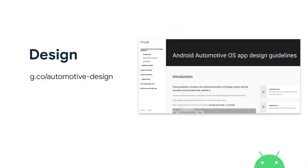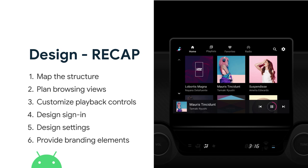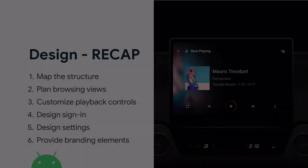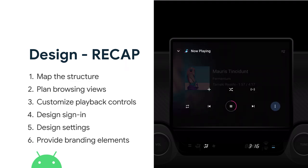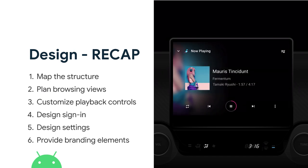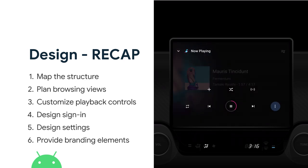On design, we have published detailed guidelines which help inform design decisions. You can find them at g.co/automotive-design, and we continue to update and improve that site. As a quick recap: if you are starting fresh, think about how you want to map the structure and plan for browsing views — how many tabs, whether you want grid view or list view. Next, think about how you want to customize your playback controls; we provide affordances for overflow controls. Then consider sign-in and settings, and finally, you can choose accent colors representative of your brand.